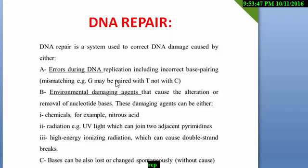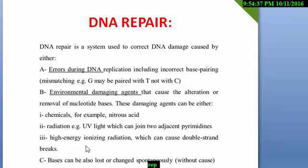If we are not capable of repairing the nucleotide sequence, it will be a great problem because it will produce non-functional protein, and that protein production effect will affect our body. Sometimes environmental damaging agents also cause DNA changes — for example, radiation and UV light can change the DNA nucleotide sequence or dismiss the DNA base pairing system. Chemicals like nitrous acid, high-energy radiation, or bases can also be lost or changed spontaneously. For that reason, we have to repair the DNA.